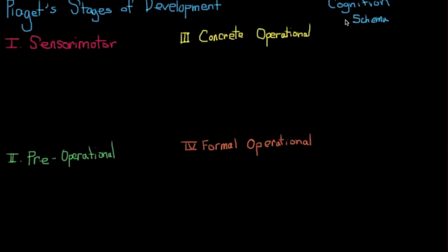Piaget proposed that we all had schemas. A schema is a concept or framework that organizes a pattern of behavior or thought, and we make sense of our world by constructing schemas. Piaget's theory was that when a child learned a new thing, they will try to assimilate that new thing into their current schema.